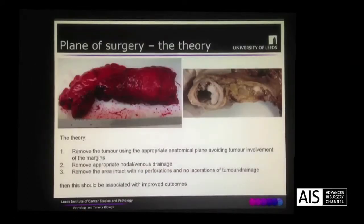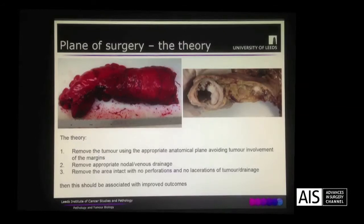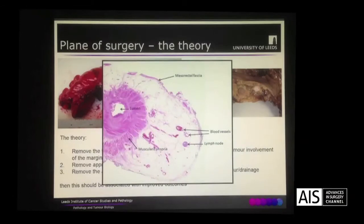This allowed us to develop a theory based on the plane of surgery: that removing the tumour using an appropriate anatomical plane, avoiding tumour involvement of the resection margins by removing appropriate lymph nodal and venous drainage systems, and most importantly removing the whole area intact with no perforations or lacerations, should be associated with improved outcomes for patients. And this makes complete oncological sense. Here you can see a complete section of the mesorectum and you can see the mesorectal fascia on the outside. Within the mesorectum you can see the blood vessels and the lymph nodes through which tumours may disseminate.